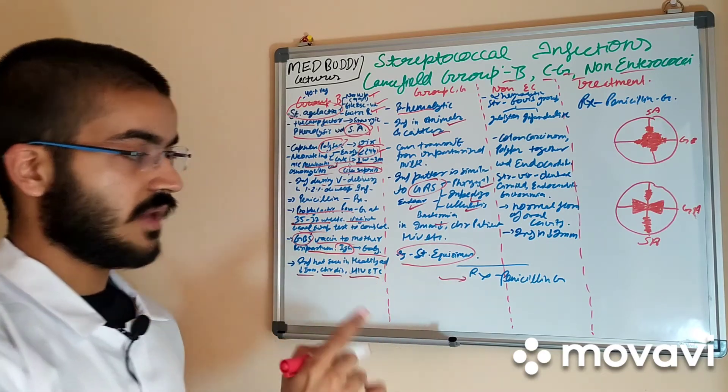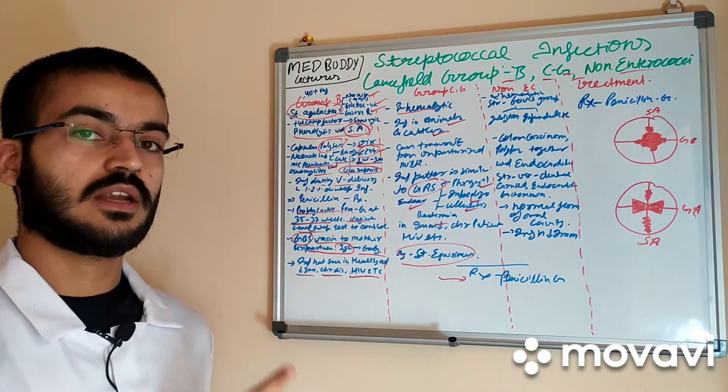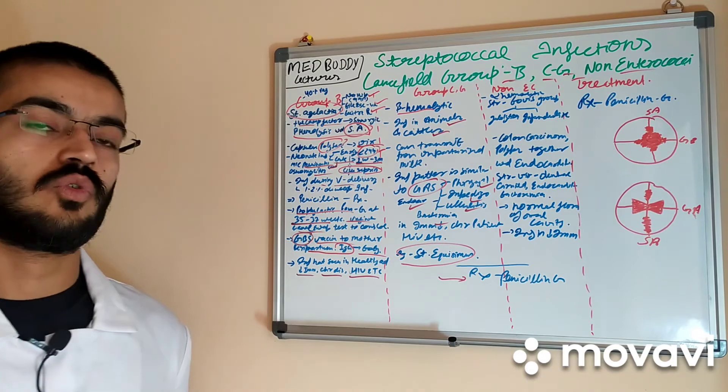Again the treatment for it is penicillin G and if resistant the treatment that is given for group A streptococci can be given in this group as well.